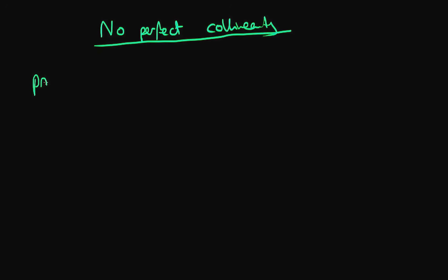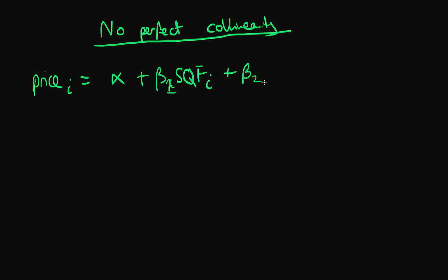So an example might be: let's say I'm interested in finding out what are the determinants of a given house price. It probably depends on the size of that house, which we could measure by the number of square feet. So let's say we included the square footage of that house in our regression, but also included the square meterage of that house. Well, it's going to be a problem for our regression to disentangle the effect of square meterage from square footage, because they are basically different measures of the same thing.